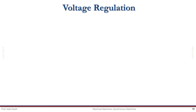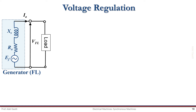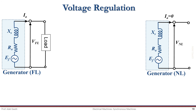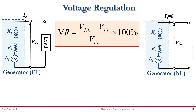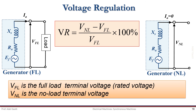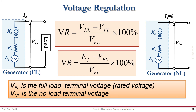Now let us consider one performance indicator of a synchronous generator: the voltage regulation. The voltage regulation is defined as the rise in voltage when the load is reduced from full rated load to zero or no load. It is expressed as V no load minus V full load, divided by V full load, multiplied by 100% to get it as a percentage. Here VFL is the full load terminal voltage which is the rated voltage, and VNL is the no load terminal voltage. Note that V no load is equal to the induced EMF, which leads to the corresponding expression of the voltage regulation.